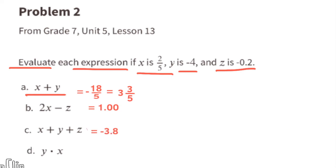Part d: y times x. Substitute y with negative 4 and x with 2/5. A negative times a positive gives a negative. Think of this as negative 4 over 1: 4 times 2 is 8 and 1 times 5 is 5. So y times x equals negative 8/5.